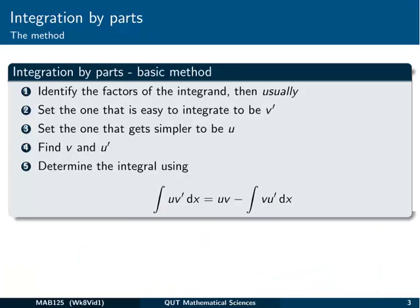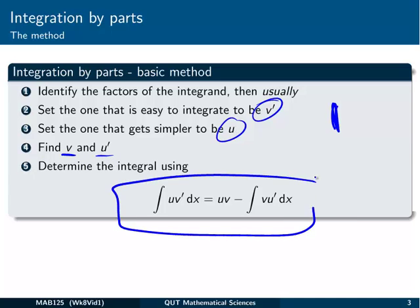So the method is pretty much summarized here for a single run of integration by parts. The first thing you do is identify the factors of the integrand, which one's going to be u and which one's going to be v'. Now I say usually, it doesn't always work this way, but you can always just swap them if it doesn't help. So set the one that's easy to integrate to be v' and the one that gets simpler when you differentiate it to be u. Find v by integrating v' and find u' by differentiating u and then sum them into the rule to give you the result. Then figure out what this integral on the right is and that will give you your final result.